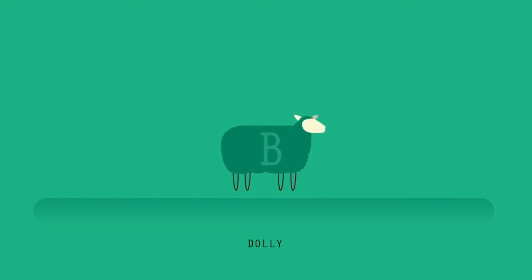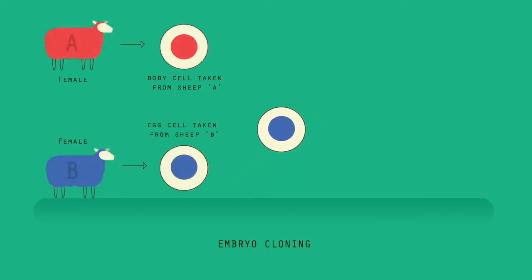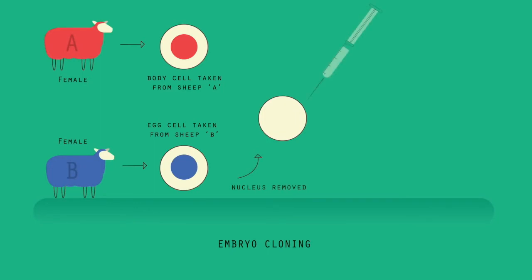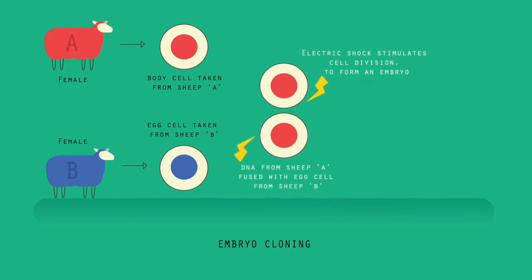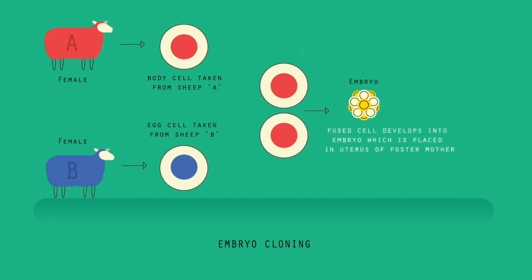Adult cell cloning is used to form a clone of an adult animal. You might have heard of Dolly the sheep — she was the first mammal to be cloned back in 1996. There are several steps to this process. An unfertilised egg cell is taken from an adult female, and the nucleus is removed. A body cell, such as a skin cell, is taken from a different adult. The nucleus is removed from this adult body cell and is inserted into the egg cell. An electric shock stimulates the egg cell to divide to form an embryo. These embryo cells contain the same genetic information as the adult body cell. When the embryo has developed into a ball of cells, it is inserted into the womb of an adult female surrogate to continue its development.